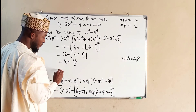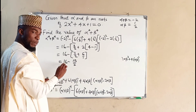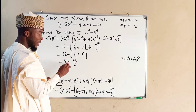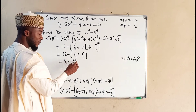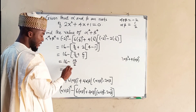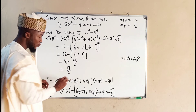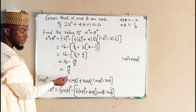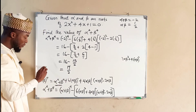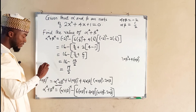So finally we have: 2 times 16 is 32, minus 15 is 17, over 2. And 17 over 2 is exactly the same thing as alpha to the power of 4 plus beta to the power of 4. So the answer is 17 over 2.